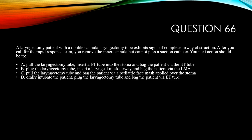Question 66. A laryngectomy patient with a double-cannula laryngectomy tube exhibits signs of complete airway obstruction. After you call a rapid response team, you remove the inner cannula but cannot pass a suction catheter. Your next action should be: A, pull the laryngectomy tube, insert an ET tube into the stoma, and bag the patient via ET tube. B, plug the laryngectomy tube, insert a laryngeal mask airway, and bag via LMA. C, pull the laryngectomy tube and bag the patient via pediatric face mask applied over the stoma. And D, orally intubate the patient, plug the laryngectomy tube, and bag via ET tube.